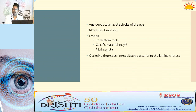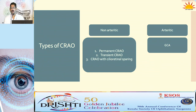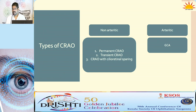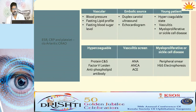Not just embolism — sometimes an occlusive thrombus immediately posterior to the lamina cribrosa may also cause CRAO. CRAO can be either non-arteritic or arteritic. Arteritic CRAO is mainly due to giant cell arteritis, treated with steroids. Non-arteritic CRAO can be permanent, transient (when patient presents with history of TIA), or CRAO with cilioretinal artery sparing. On seeing a patient with CRAO, first rule out arteritic CRAO by checking ESR, CRP, and platelets.